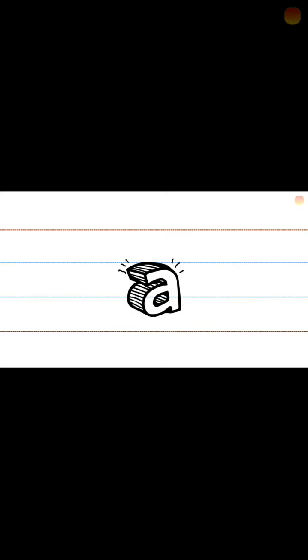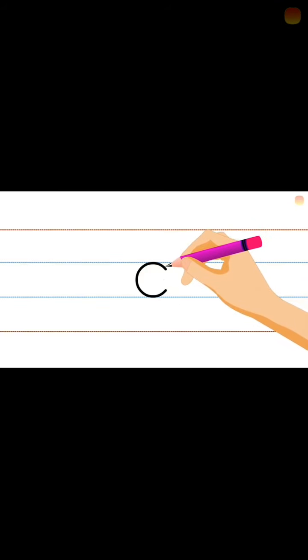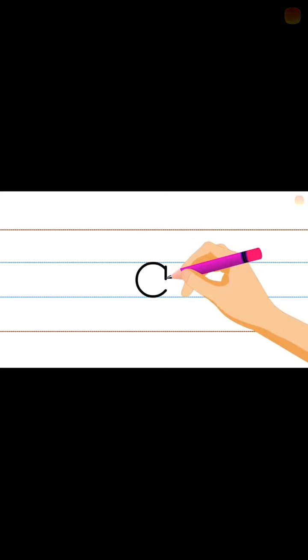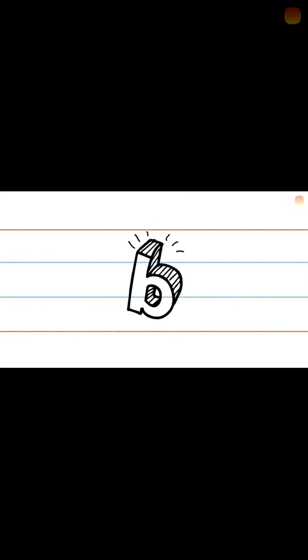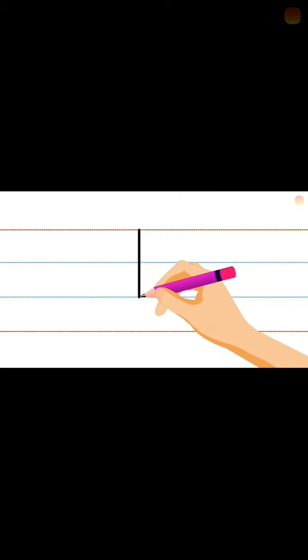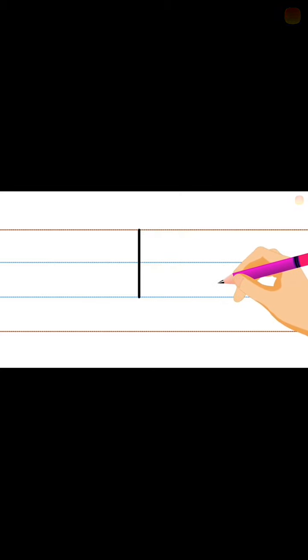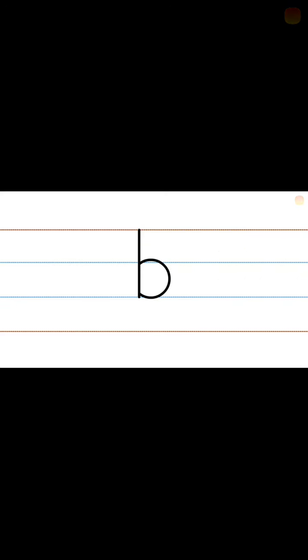What is this? Small a. How to write small a? Very good. This is a small a. Next is small b. How to write? Start from the top and make a straight line. And now up to the middle, make a curve line. Finished.